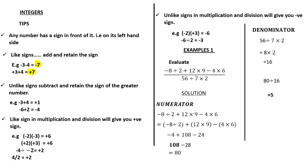So the answer for this question is positive 5. Make sure you always do the numerator aside and the denominator on the other side, combine them after you have gotten your answers for each part.